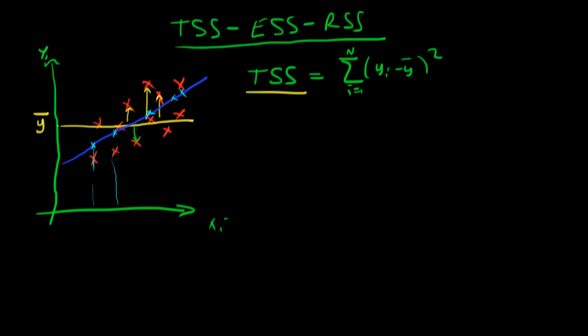Then it might be interesting to say, well, using our model, how much of this variation of y, or the points y, from their average y bar, is explained by our model? And we could do that by summing up from i equals 1 to n our predicted values of yi minus y bar all squared.